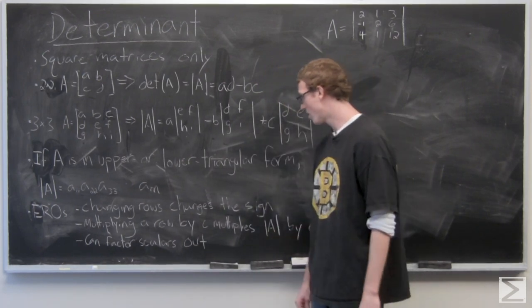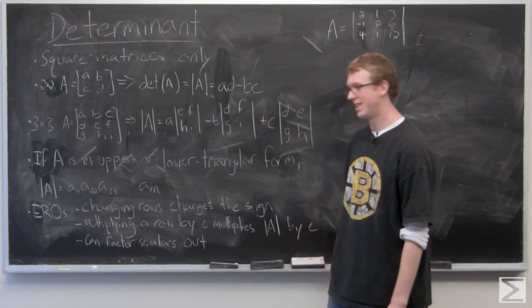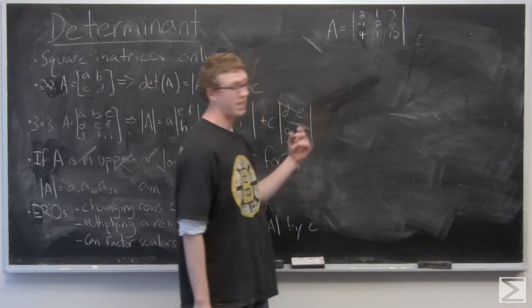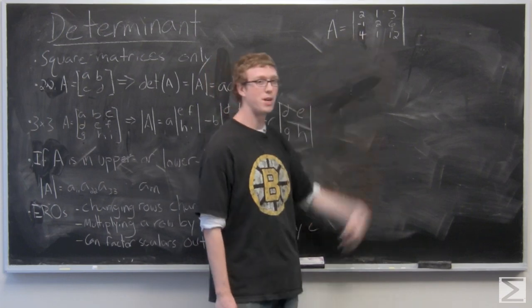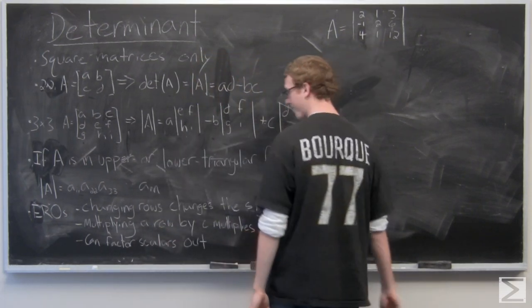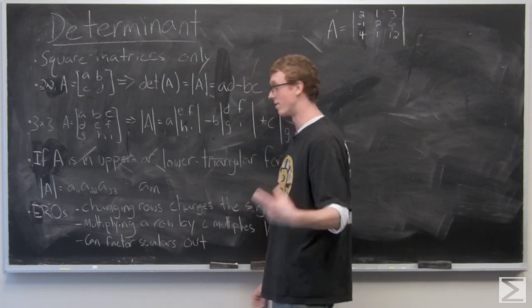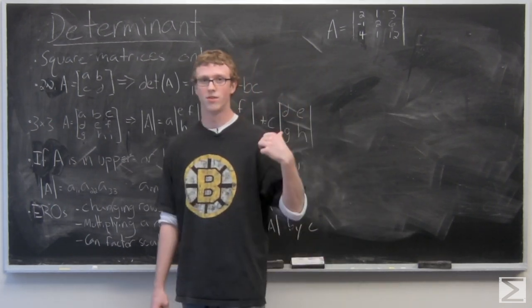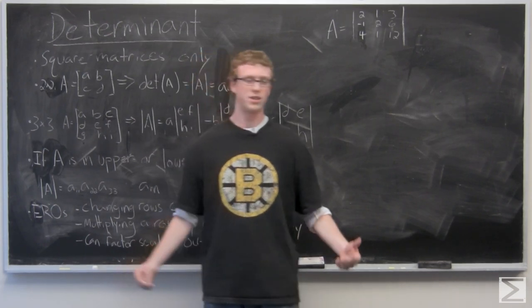Multiplying a row by a scalar C multiplies the entire determinant by C. So if we thought it would be easier to multiply the second row by two, we would have to multiply the determinant by two. And we can factor out scalars in front of the equation. So let's look at the example.